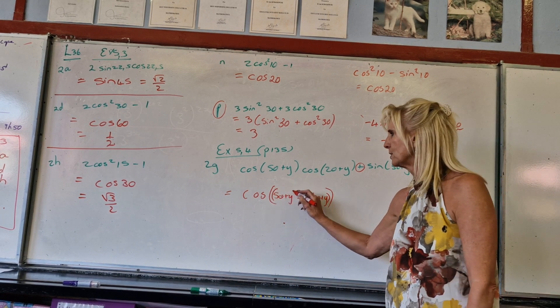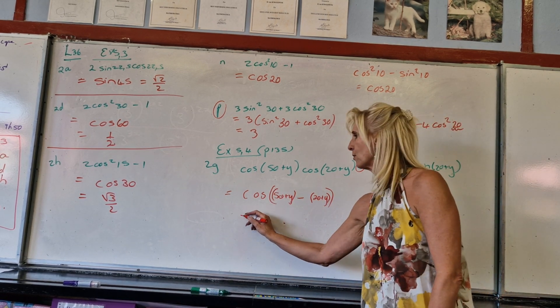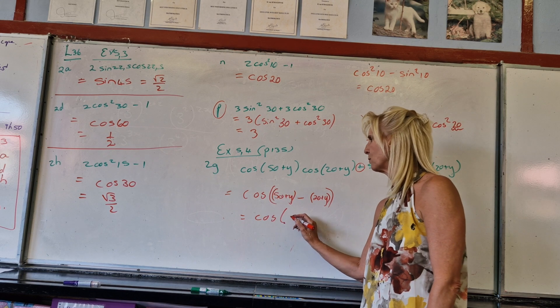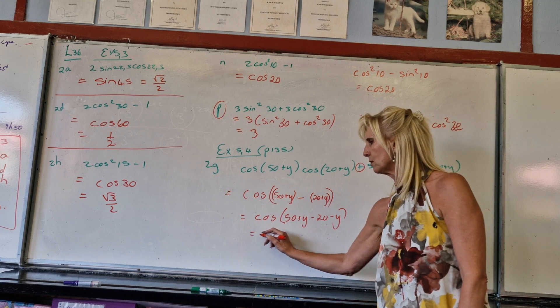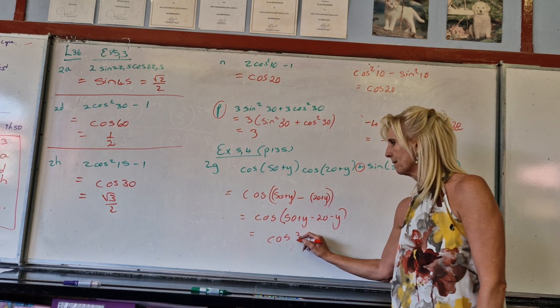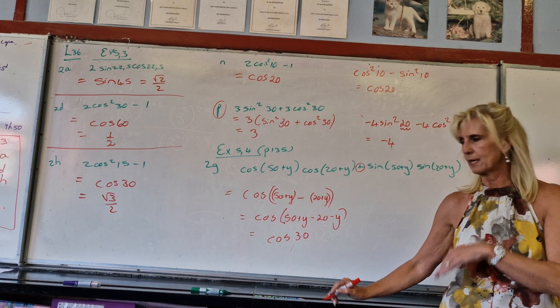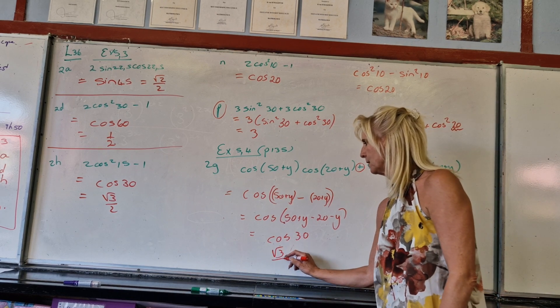So please, always use your brackets. So we've got cos. Now you can do that in one step. 50 + y - 20 - y, which will give me cos 30. Which is, again, √3 over 2.